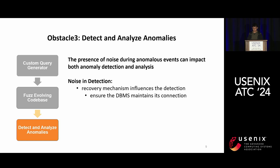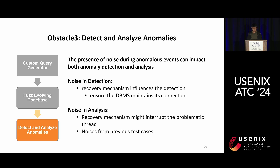The third obstacle is the disturbance of noise, introducing complexity in anomaly detection and analysis. Automatic recovery mechanisms introduce noise into the fuzzer's anomaly detection, as detection typically relies on checking whether the connection is normal. For example, ClickHouse maintains its connection with the fuzzer and can continue accepting queries despite a crash, making it challenging to determine whether the DBMS has actually crashed. Additionally, the recovery mechanism can interrupt the problematic thread, mixing the crash stack with stacks from multiple threads, adding noise to stack traces. State-of-the-art fuzzers also run tests consecutively, causing inter-test interference.